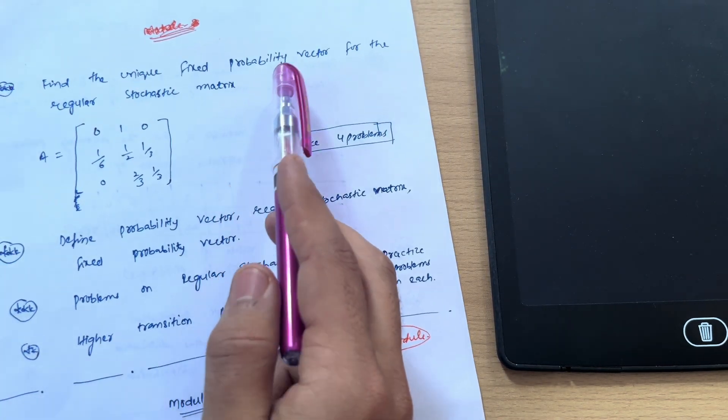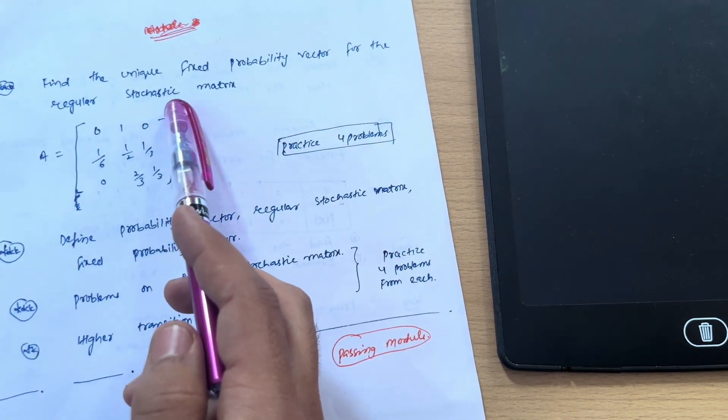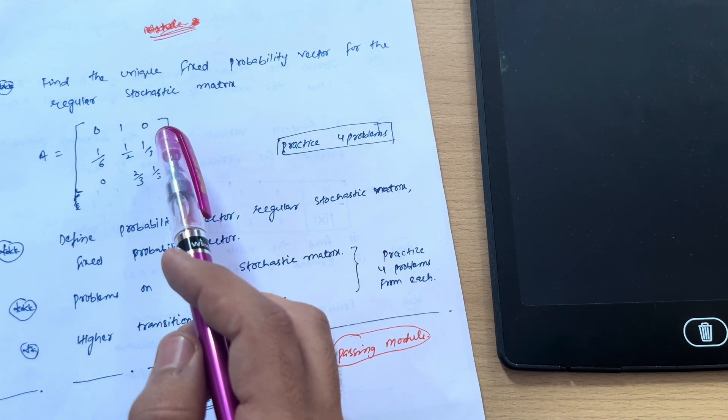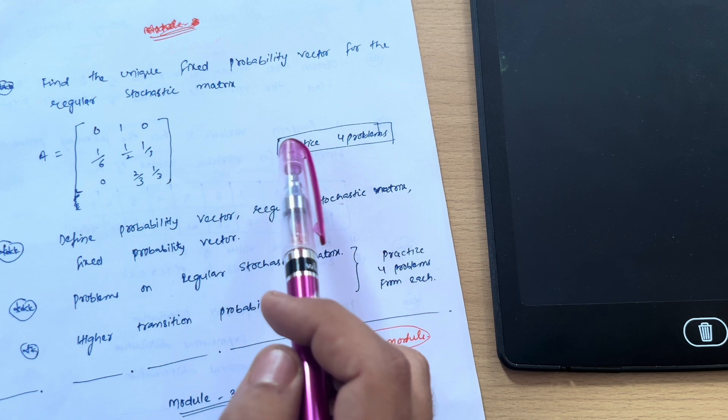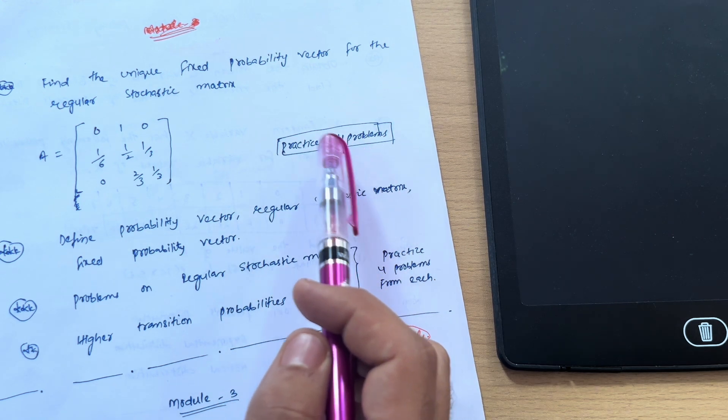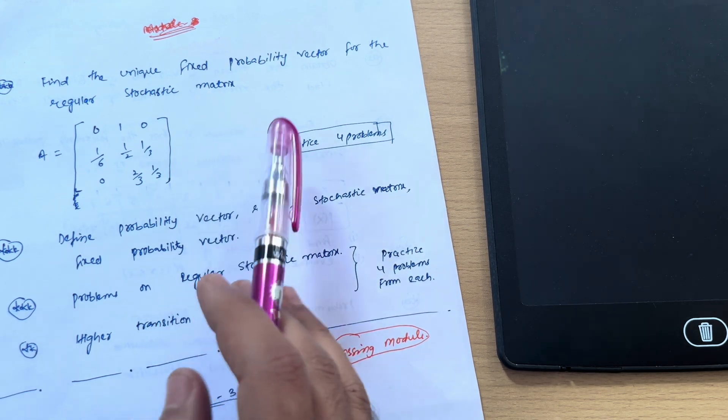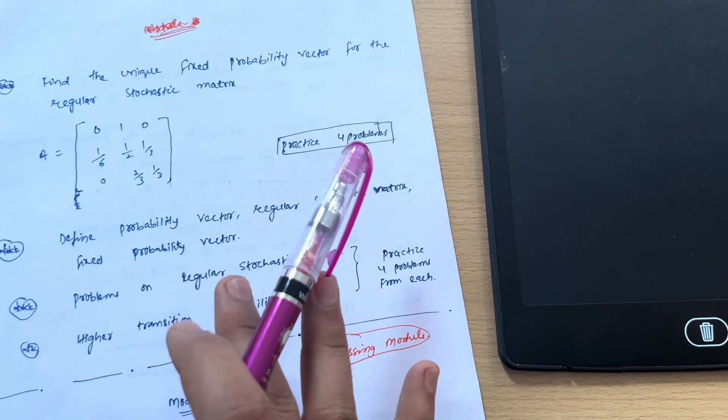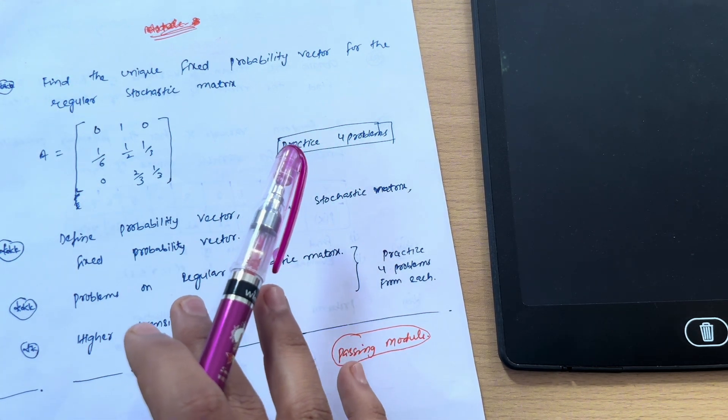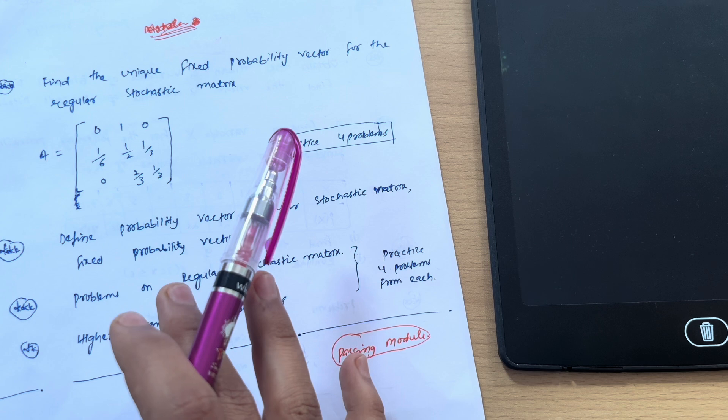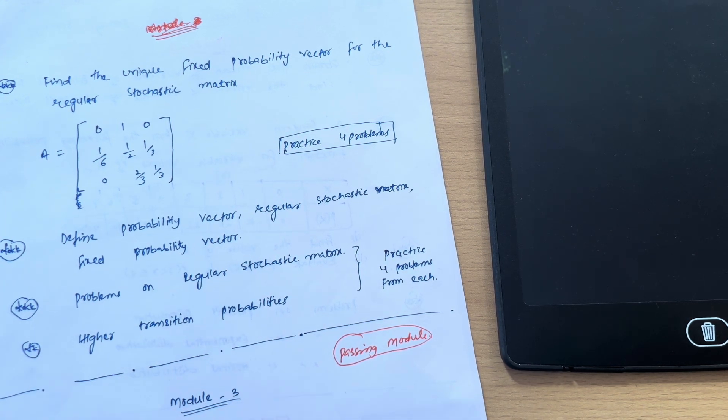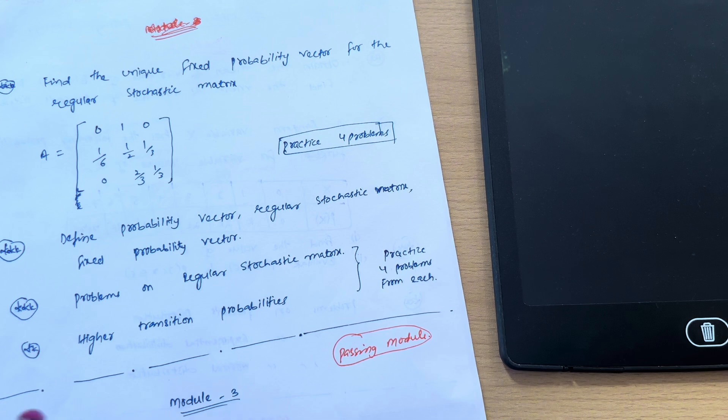Next we have find the unique fixed probability vector for the regular stochastic matrix. The matrix will be given—it's a fixed question, seven to eight marks. You have to practice four problems at least from this particular concept, and also from joint probability you have to practice four to five problems from previous year question papers and also from the model question papers. If you are unable to get papers, let me know in the comment section. I will upload those previous year question papers on my Instagram account.